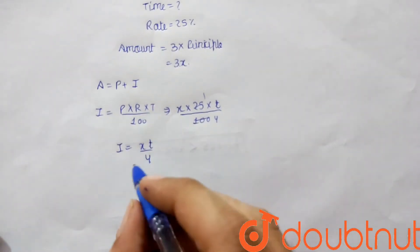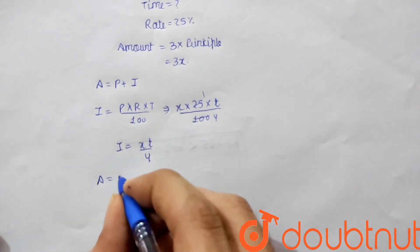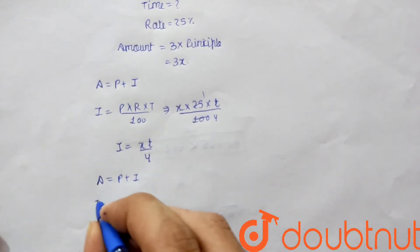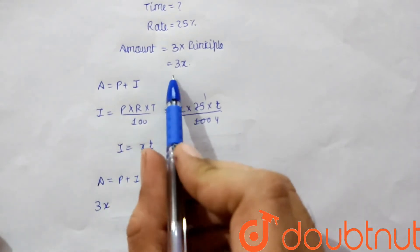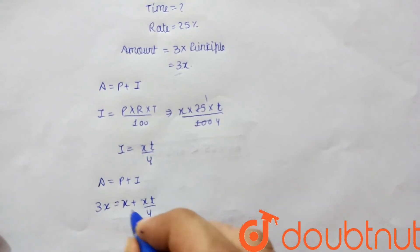Now, amount equals principal plus interest. Amount is 3X, principal is X, and interest is XT/4.